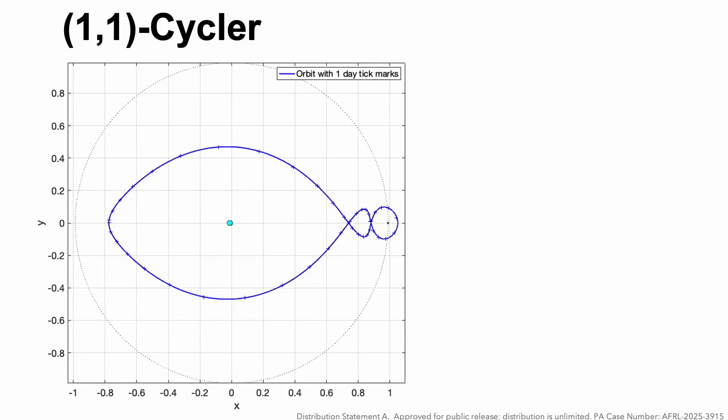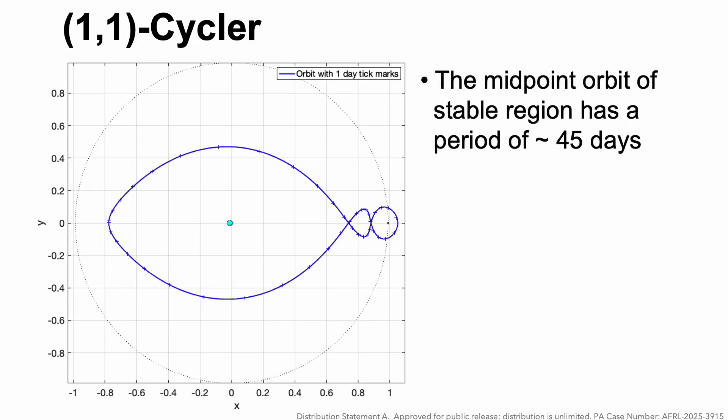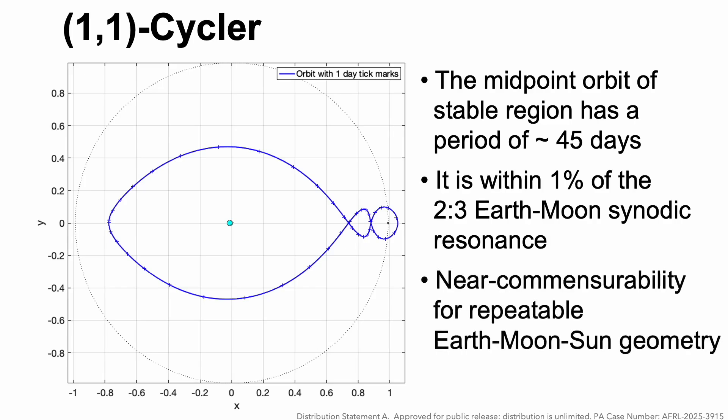Here's an example of a (1,1) cycler. We're showing the orbit in the rotating frame with one-day tick marks. The midpoint orbit of one of the stable regions has a period of about 45 days, which is within a percent of the 2-3 Earth-Moon synodic resonance, which is important for repeatable Earth-Moon-Sun geometry.